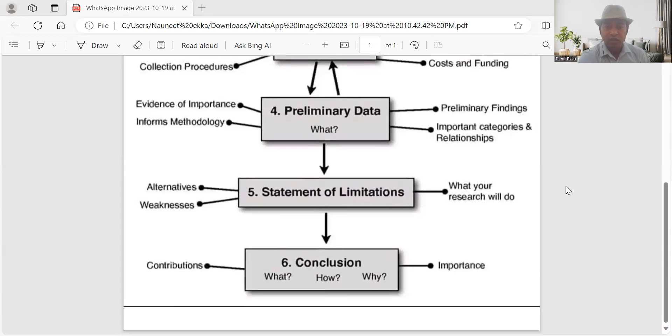Then comes the conclusion. It talks about what is the importance of this, what kind of contribution they will make, what kind of research output they are expecting. These things will come in the research proposal.